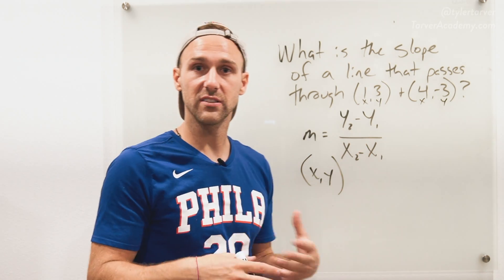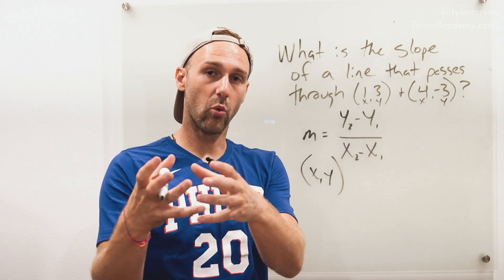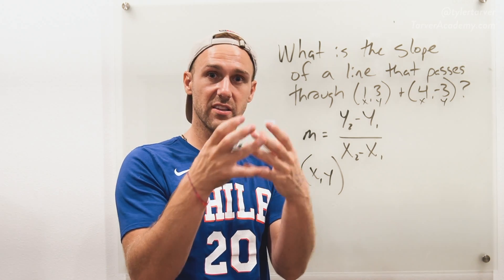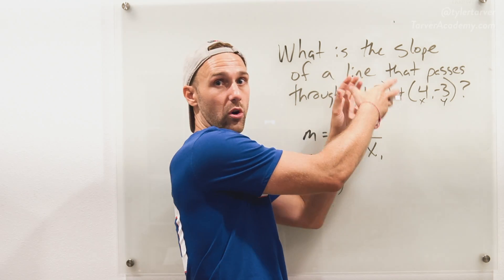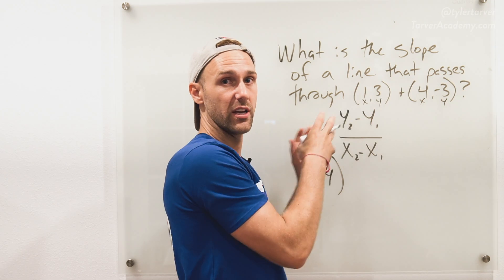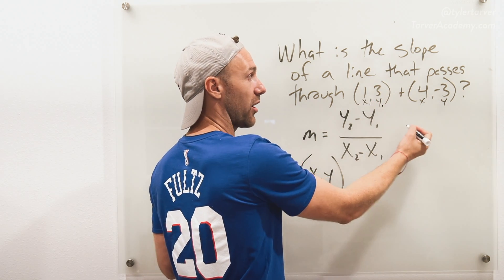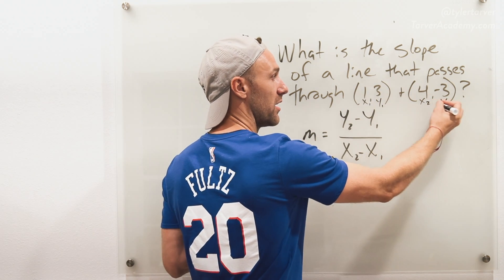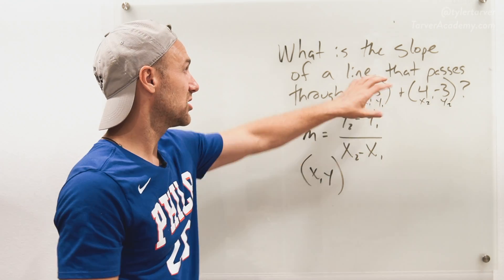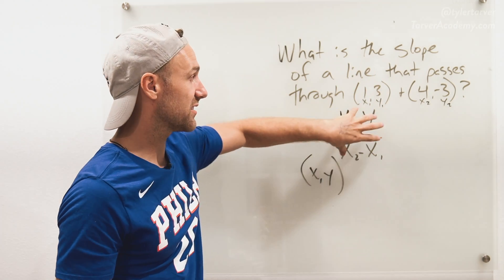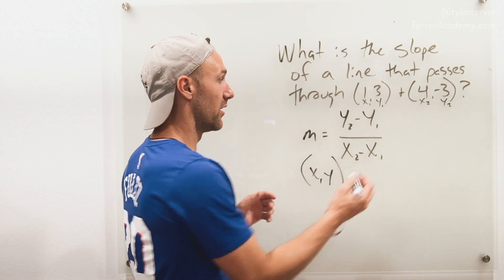You're thinking, well, what do the little ones and little twos mean? That just means that a one is one of your coordinates and the two is the other coordinate. It doesn't matter which one you make your one and your two, as long as you keep them consistent. So that's going to be our x1 and our y1, x2, y2.